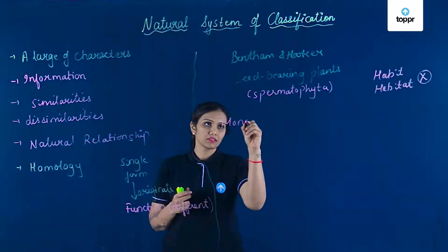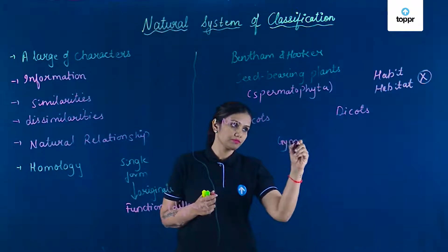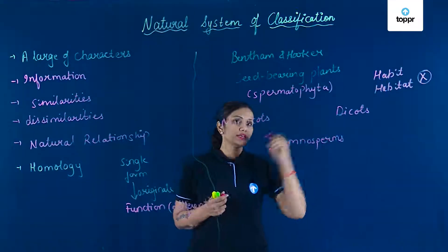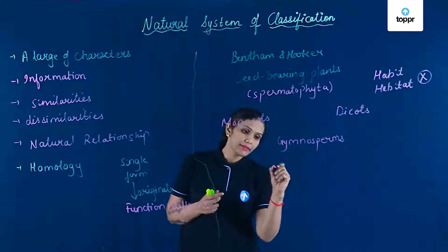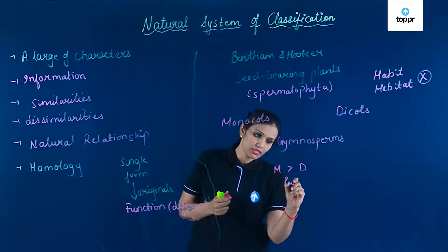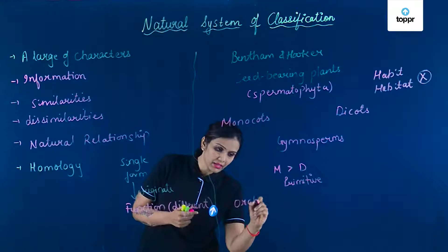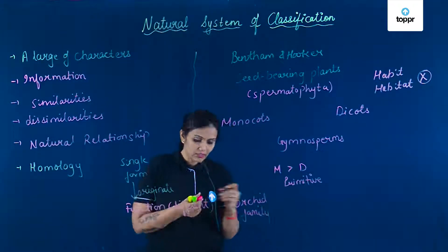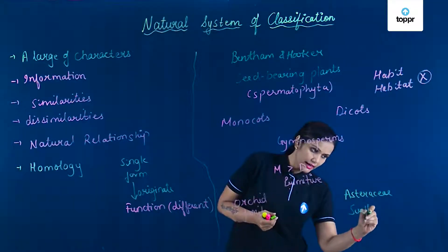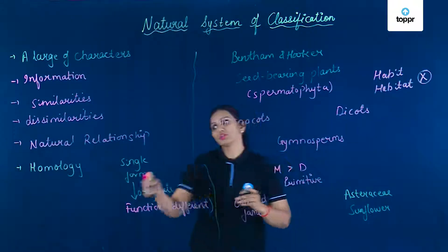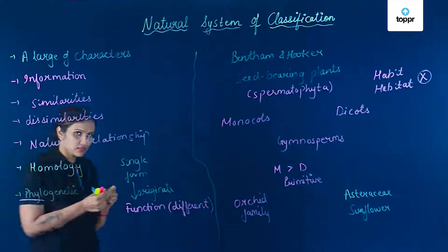Inhone classify kiya plants ko in monocot, dicots, and gymnosperms. As you know, monocot ke andar one seed hoga, dicot ke andar two seeds honge. Isse study karne se humein yeh pata chalta hai ki monocot is more primitive than dicot — yeh pahle evolved huye hain. Monocot ke andar jo orchid family hai, orchid is the advanced form. And dicot ke andar, the Asteraceae — that is the sunflower family — is the advanced in case of dicot. So yeh humein evolutionary, uska phylogenetic relationship bhi batati hai. By looking at it, we can say how their ancestral history has been.